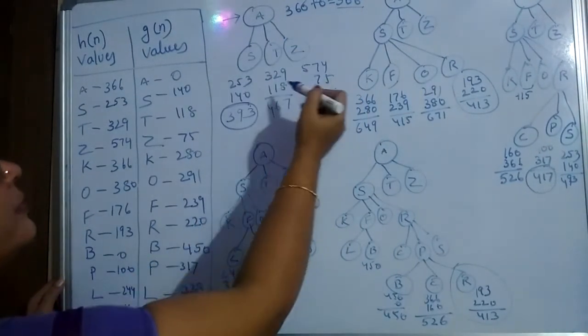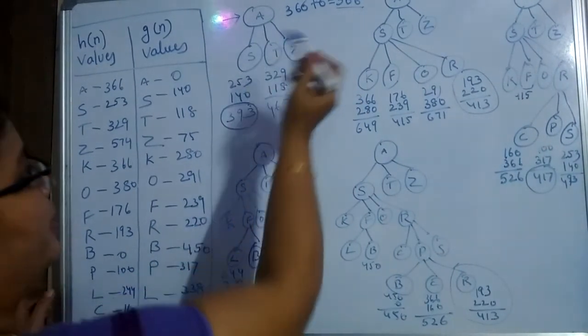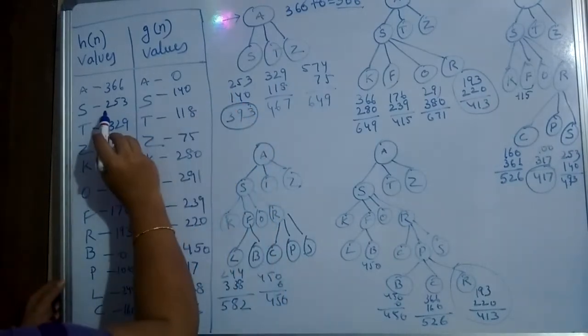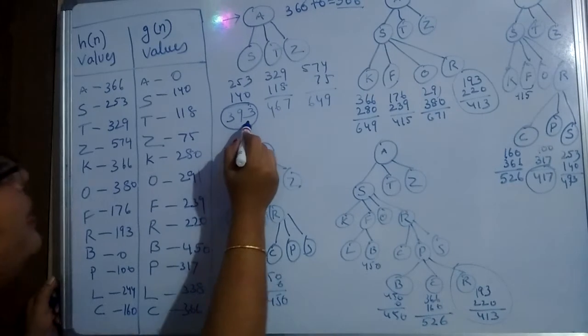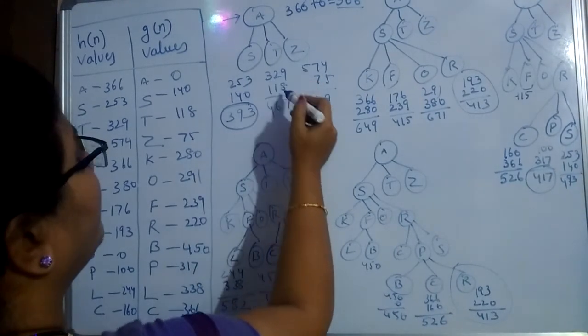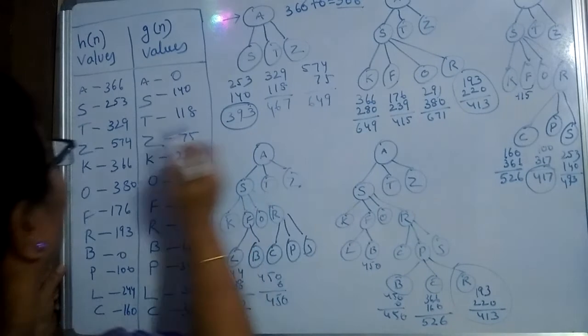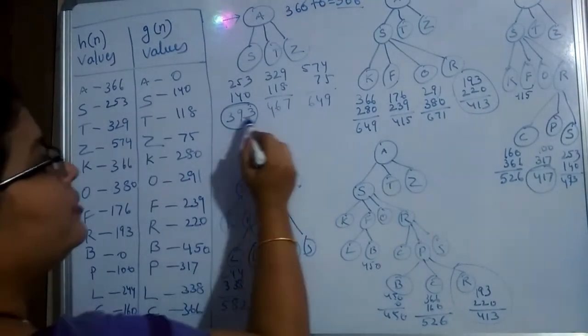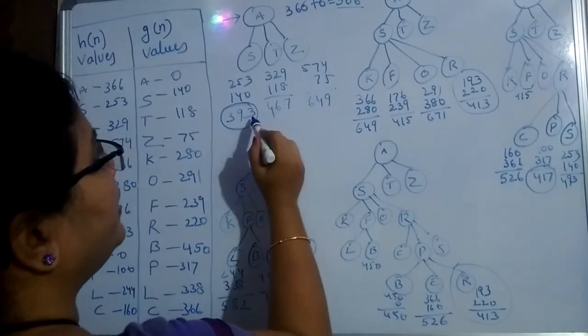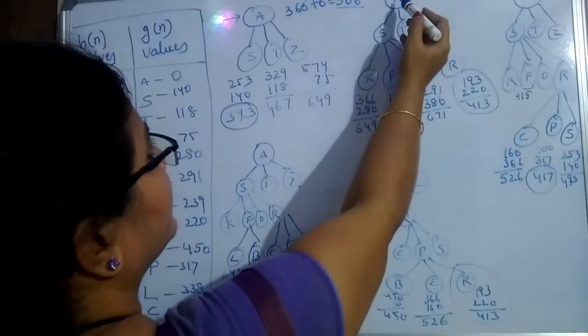I expanded this A to S, T, Z. At S, the value is 253 and G of N value 140, we got 393. In the same manner, T 329, 118, 467. Z also 574, 75, we got 649. So what is the minimum in this level? 393. So I expanded 393.